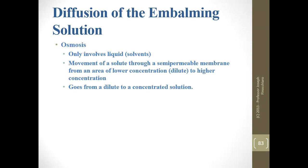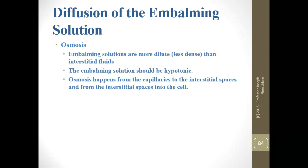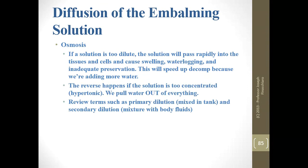Osmosis only involves liquids — it is the movement of a liquid through a semi-permeable membrane from an area of lower concentration to higher concentration. Embalming solutions are more dilute — less dense — than interstitial fluids, so the embalming solution should be hypotonic. Osmosis happens from the capillaries to the interstitial spaces and from the interstitial spaces into the cells; it is a two-way street. If a solution is too dilute, it will pass rapidly into tissues and cells, causing swelling, waterlogging, and inadequate preservation. If too concentrated — hypertonic — water rushes out of tissue spaces to dilute the arterial system content.